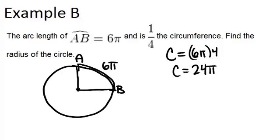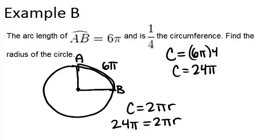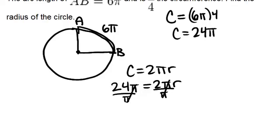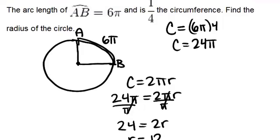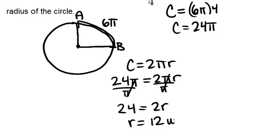So if the circumference is 24π, I can use that to figure out the radius. Remember that one of the formulas for circumference is 2πr. So if the circumference is 24π, I can do 24π equals 2πr and solve this for r. First I can divide both sides by π to get 24 equals 2r, which means the radius r equals 12. In this problem we aren't given any units, so we can just say 12 units.